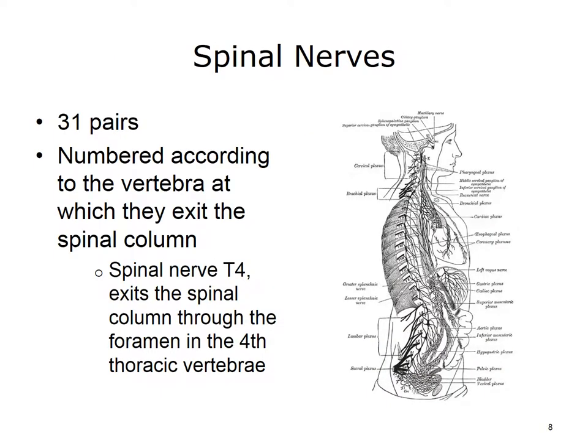There are 31 pairs of spinal nerves which branch off from the spinal cord. The spinal nerves carry messages to and from the spinal cord. In the cervical region of the spinal cord, the spinal nerves exit above the vertebrae until the 7th cervical vertebra, at which point they begin to exit below the equivalent numbered vertebrae. The spinal nerves are numbered according to the vertebrae at which they exit the spinal column. For example, the spinal nerve that leaves at T4 exits through the foramen in the 4th thoracic vertebra.